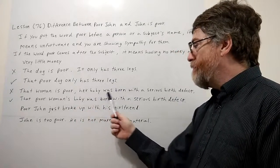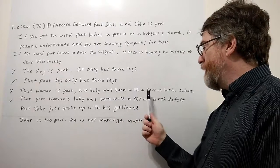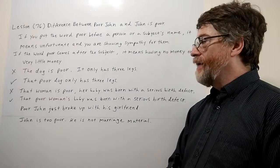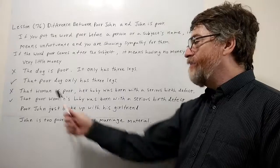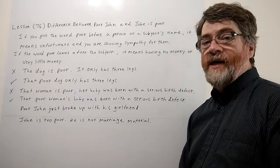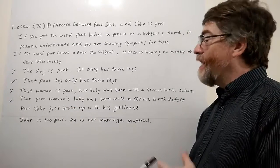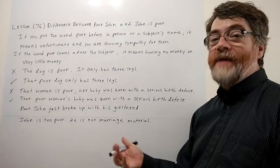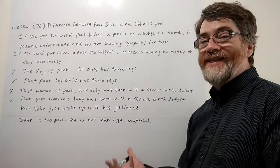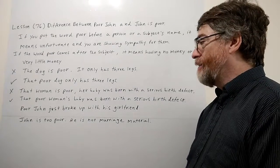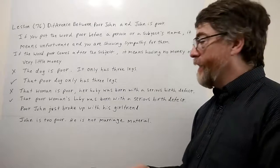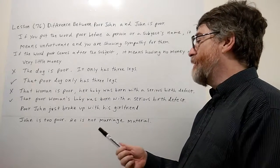Another example: 'That woman is poor — her baby was born with a serious birth defect.' Here again, saying 'the woman is poor' implies she has little or no money. That's not what you actually meant. You were trying to say she's in a very unfortunate situation. She may not be poor at all — she may actually have money.